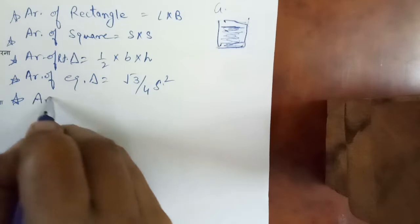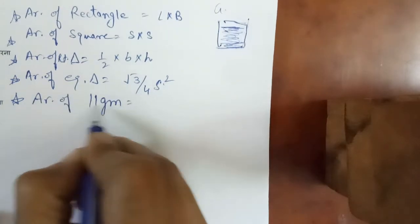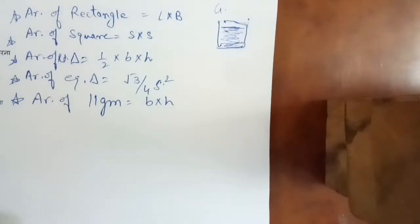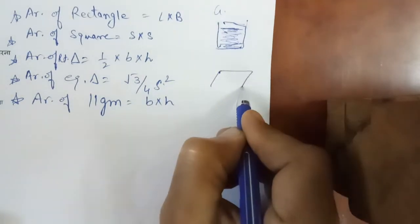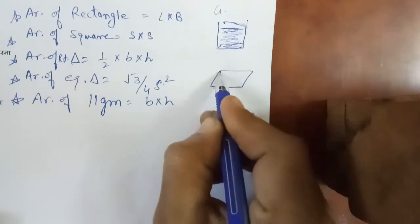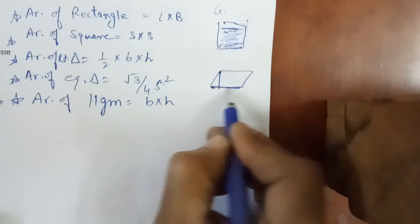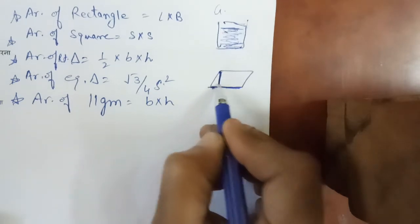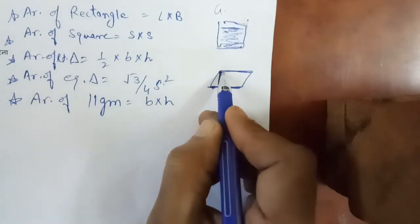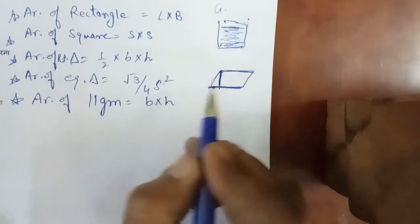Next is area of parallelogram. Parallelogram का formula है base into height. Parallelogram में एक height दी होती है, और जिस side के ऊपर यह height है, corresponding base उसी को माना जाएगा. मतलब यह side दी होनी चाहिए और यह height दी होनी चाहिए — दोनों में से कोई एक side और उसके according height दी होनी चाहिए, इस बात का ध्यान रखना है.